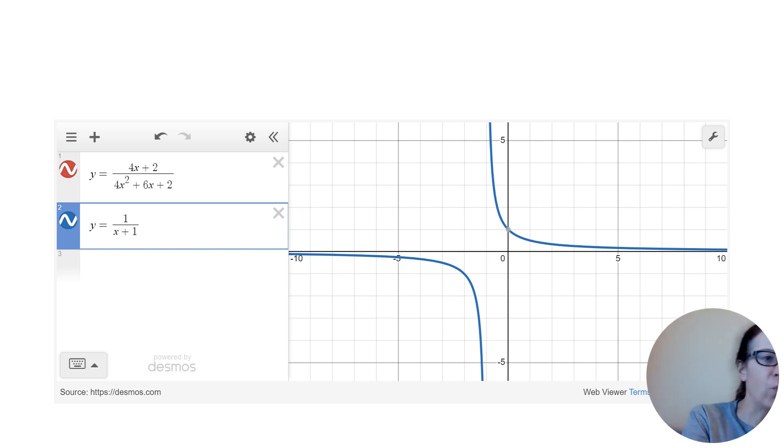If you could save some time there, but I wanted to show you what that looked like in the problem that we just did. So we just worked the problem, four X plus two over four X squared plus six X plus two. And the answer we got from that was one over X plus one.